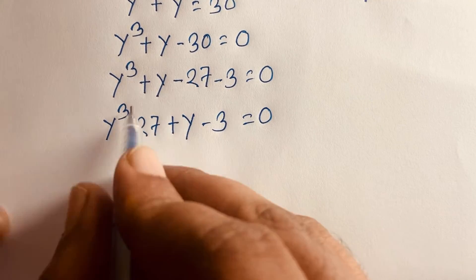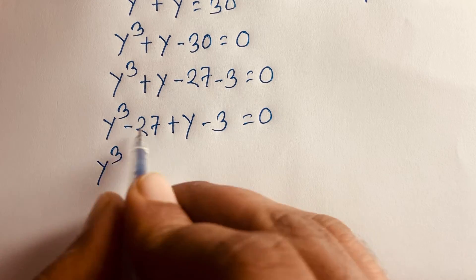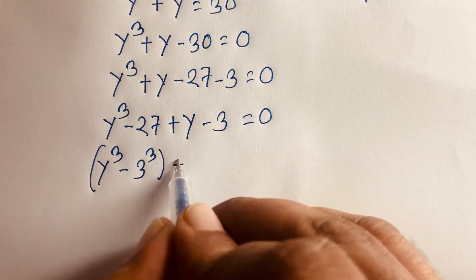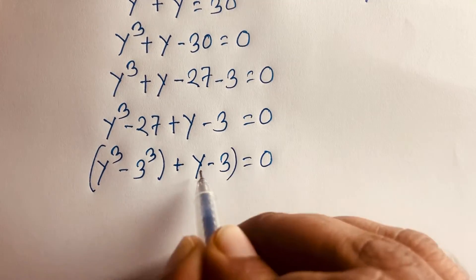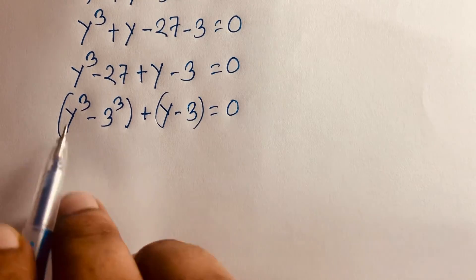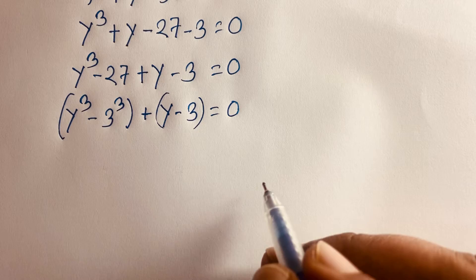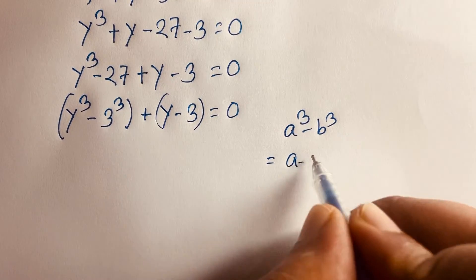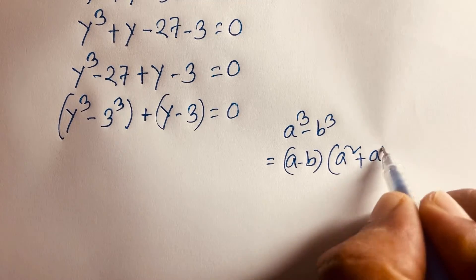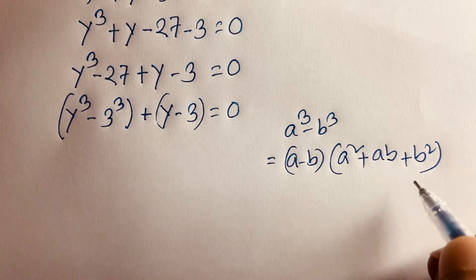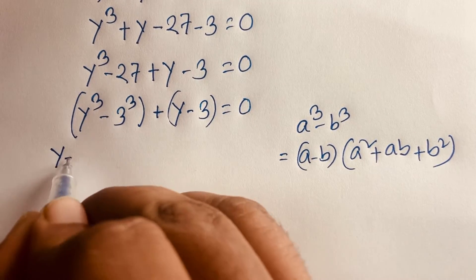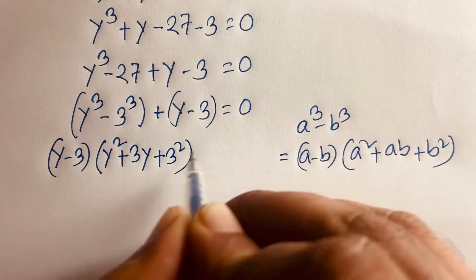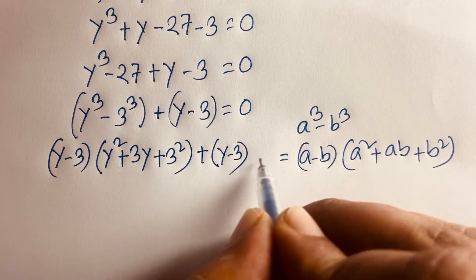Now, 27 equals 3³, so we have y³ − 3³ plus y − 3 = 0. Using the difference of cubes formula, a³ − b³ = (a − b)(a² + ab + b²), we get (y − 3)(y² + 3y + 9) plus (y − 3) = 0.